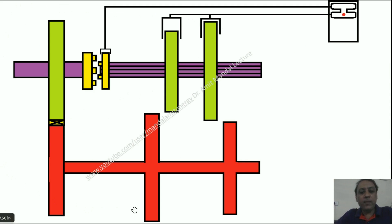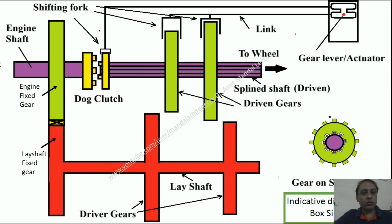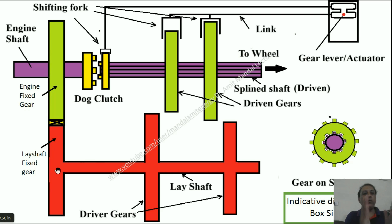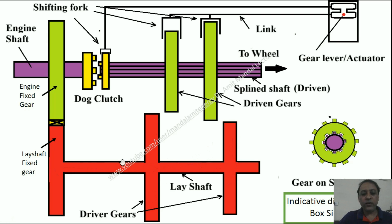Here is the schematic — an indicative diagram of a sliding mesh gearbox. These are the legends. This is the engine shaft, and the engine shaft is connected to an engine fixed gear which is meshing with the lay shaft gear. This is the lay shaft, shown in red. This gear meshes with the lay shaft gear — this is the side view of the gear. If you take the front view, you will observe round gears. When power comes to the lay shaft, it reaches these two gears which are rigidly fixed on this lay shaft.